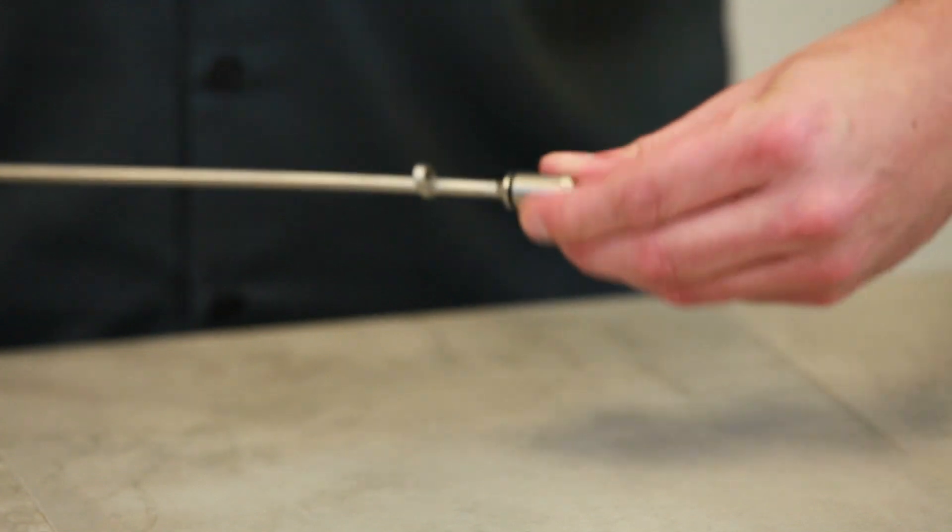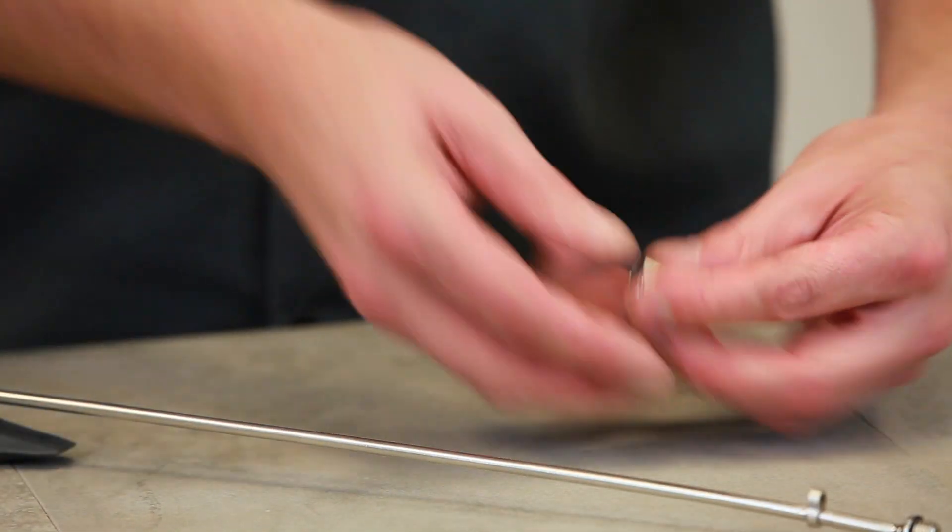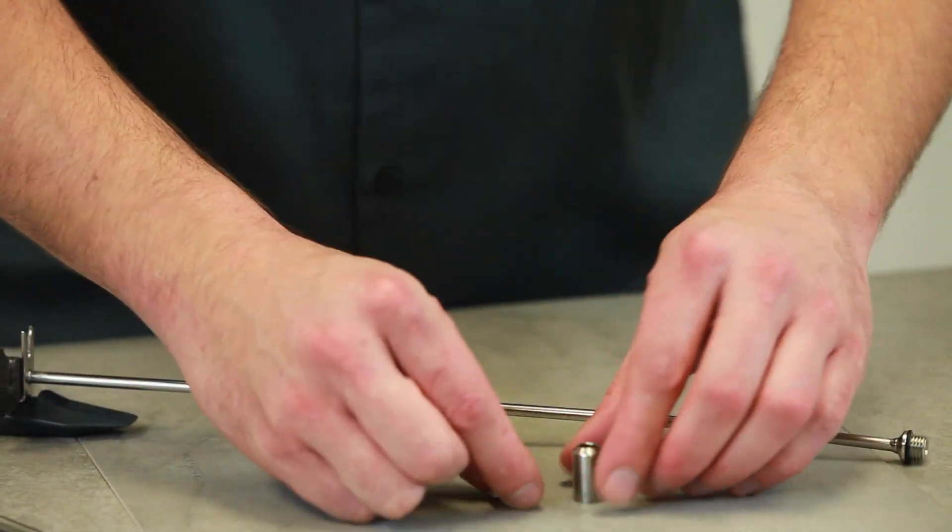The filling tip is also very easy to disassemble. Simply unthread the tip and remove the spring and internal poppet valve. You are now ready to clean and sanitize all the parts.